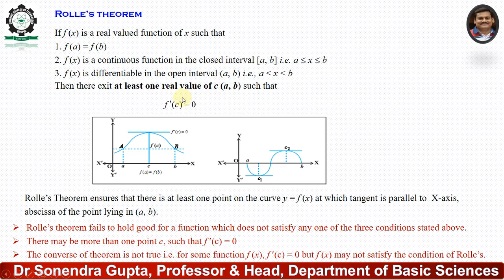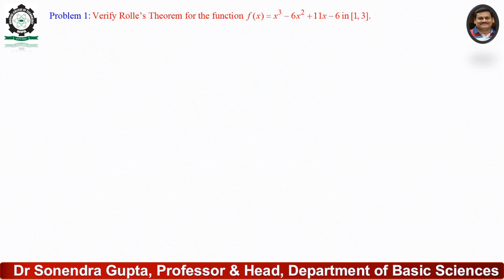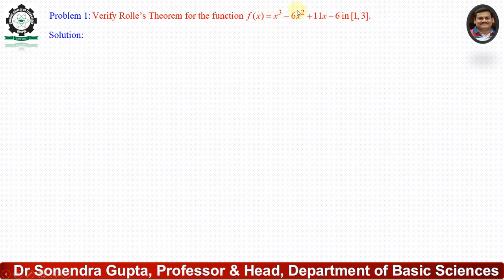Now we will explain this theorem with the help of examples. The first problem is: verify Rolle's Theorem for the function f(x) = x³ − 6x² + 11x − 6 in the closed interval [a, b]. In this problem the function is a polynomial and the interval is finite. Here a = 1 and b = 3.